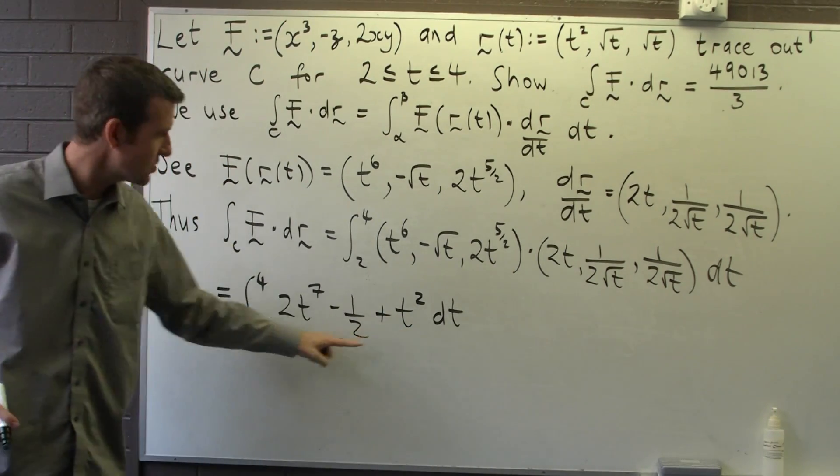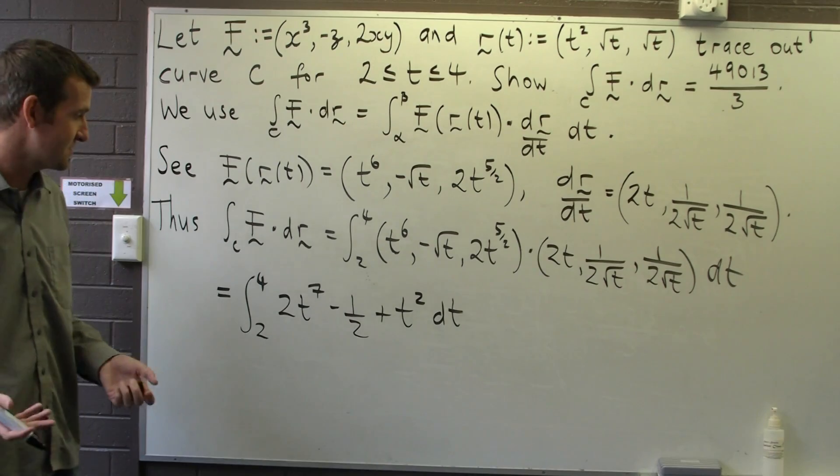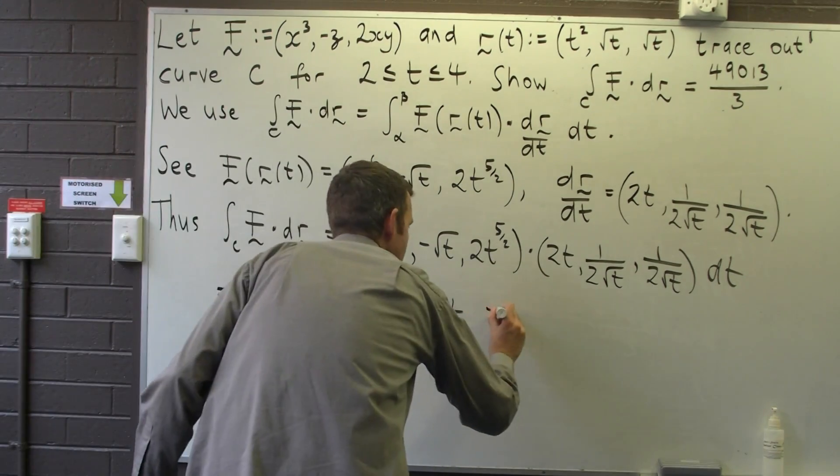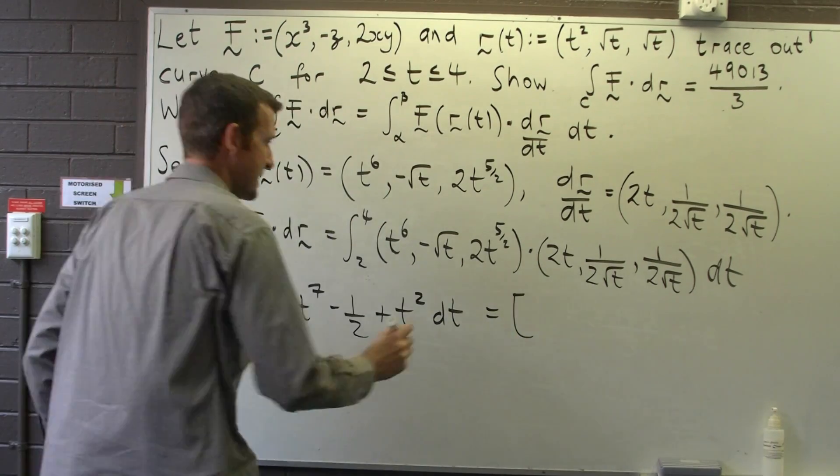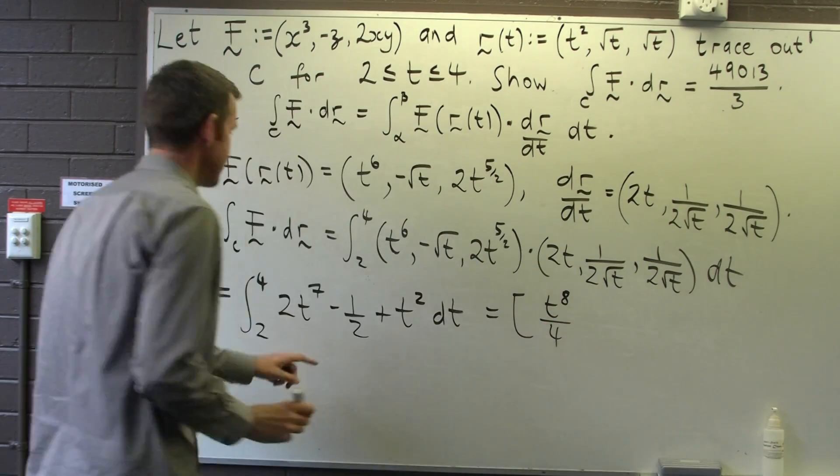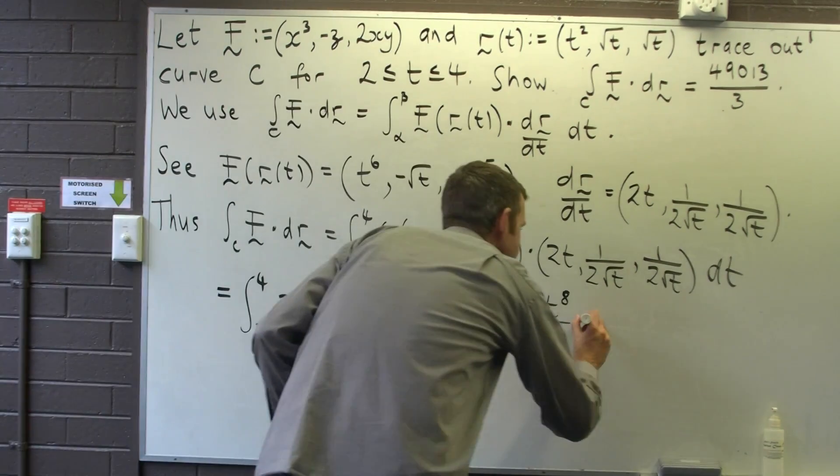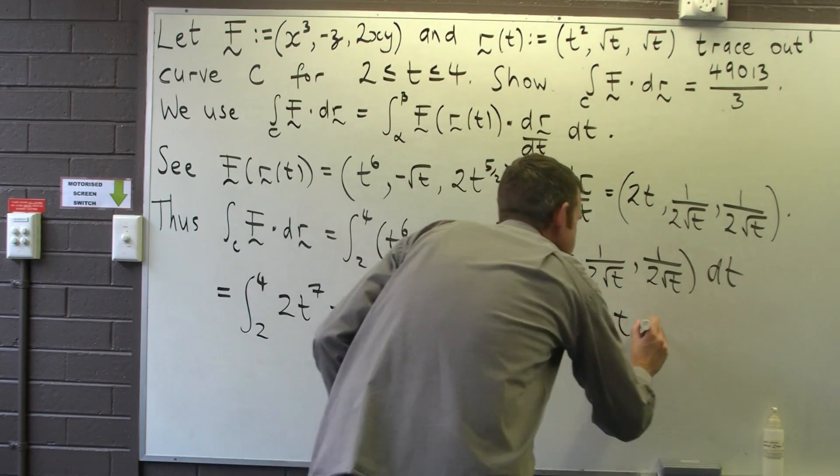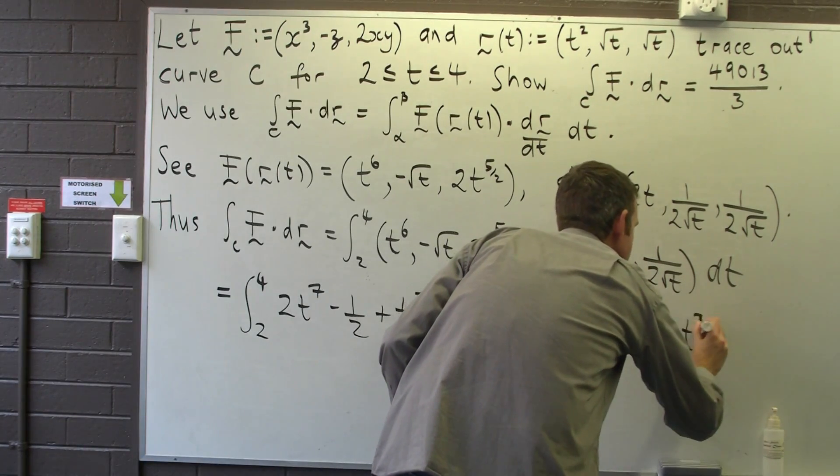So now we've broken our problem down to an integral that we recognize we can evaluate. The first term is going to become t to the 8 on 4, the second term is going to become minus 1 half t, and the third term is going to be 1 third t cubed.